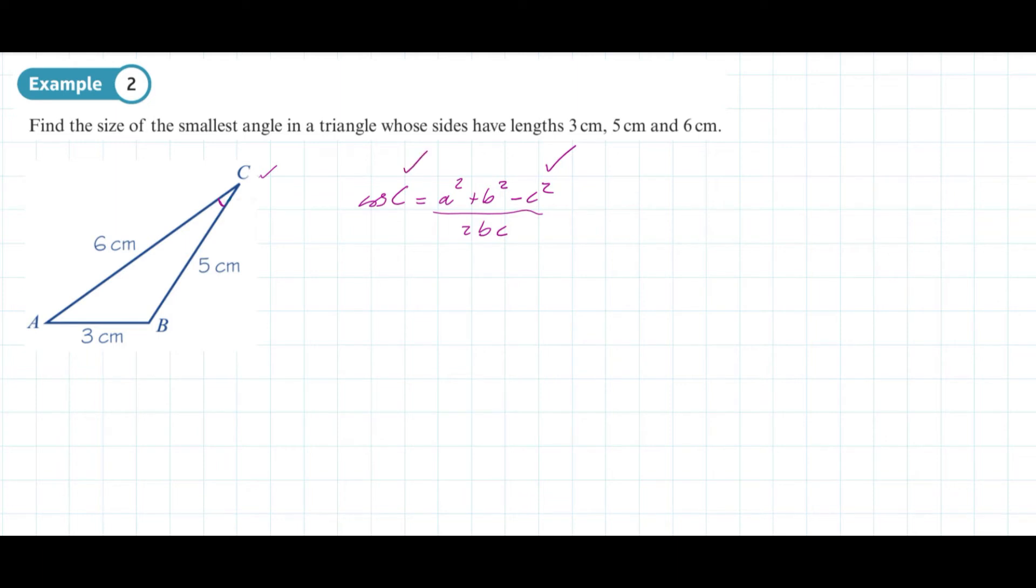It's quite common for students using the cosine rule to accidentally work out a different angle than the one they're interested in. Importantly, c is going to have a value of 3. It doesn't matter which way around the 5 and 6 are for substituting into b and a.